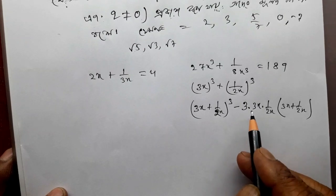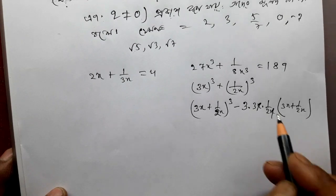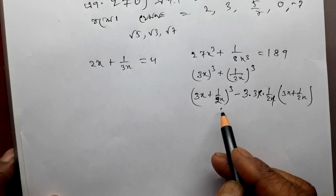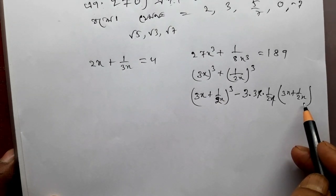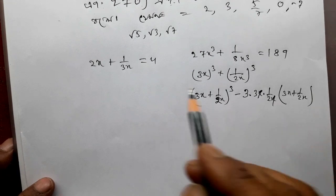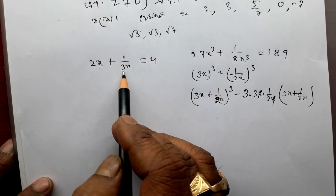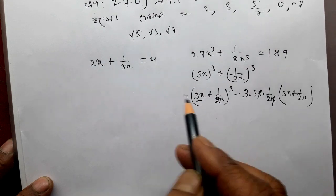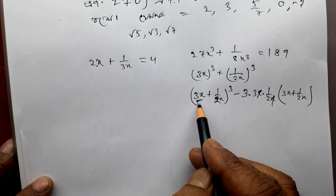a plus b whole cube minus 3ab into a plus b. 3x plus 1 by 2x is equal to 2. So now we have 2x equals to a plus b, and we also get 3x equal to t.